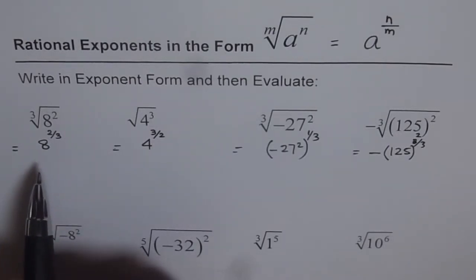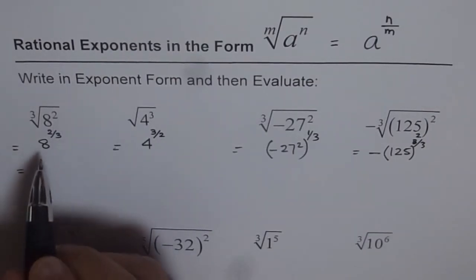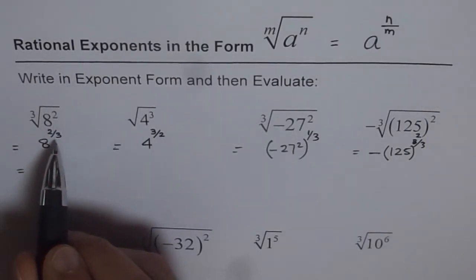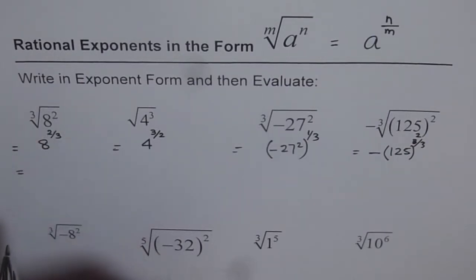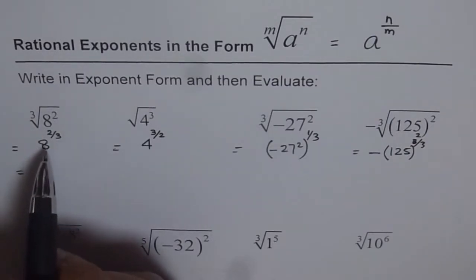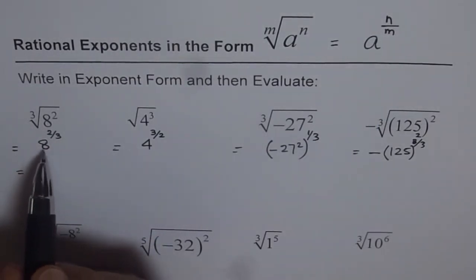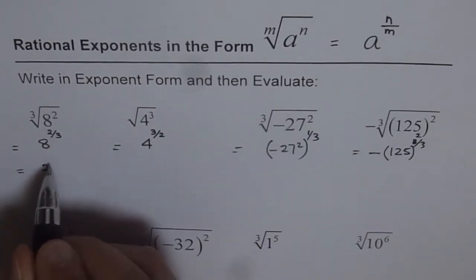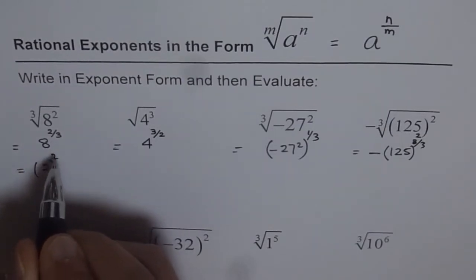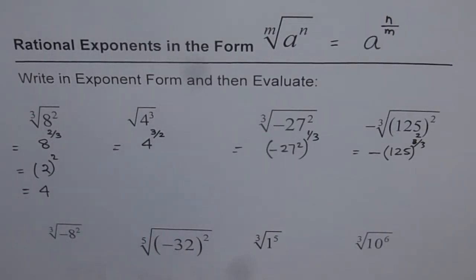Now let's try to evaluate these exponents. When we have 8 squared cube root, you have an option: you can either do the square first or the cube root first. It's better to do the cube root first — we'll be dealing with smaller numbers. Cube root of 8 is 2, so we get 2 and 2 squared is 4. So we get 4 as our answer.